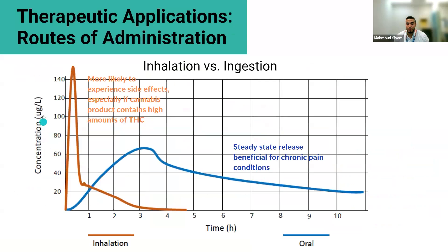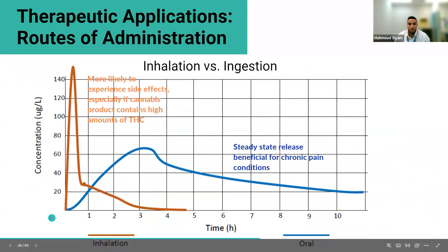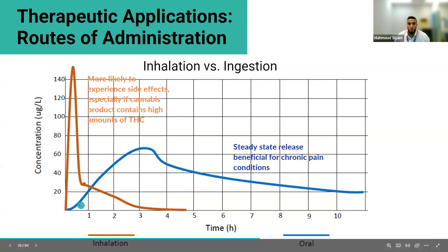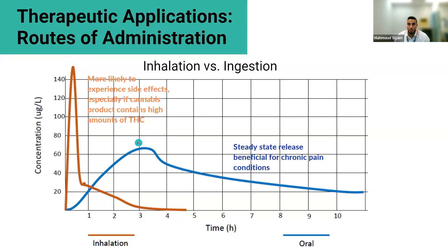With inhalation, you get a sudden peak that puts the patient at risk of adverse effects, followed by a sudden fall — it doesn't last very long. With ingestion, you don't get that peak, so the risk of adverse effects is reduced, and you get a delayed, sustained release. For someone dealing with chronic pain who benefits from a sustained-release medication, oral ingestion routes are generally more favorable than inhalation.